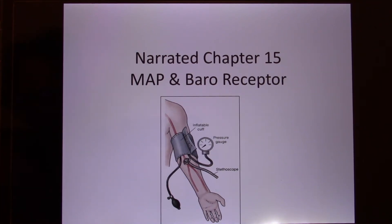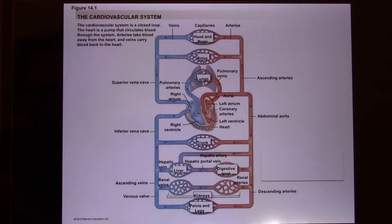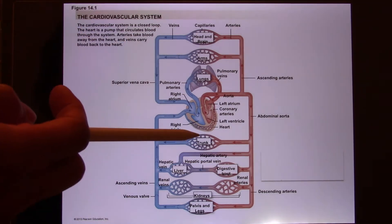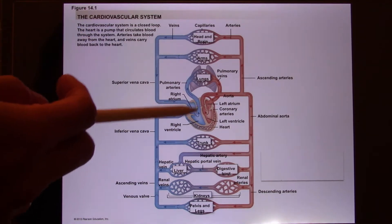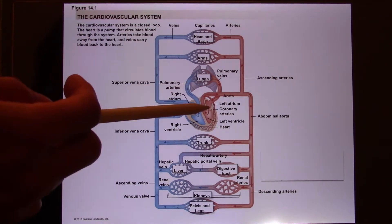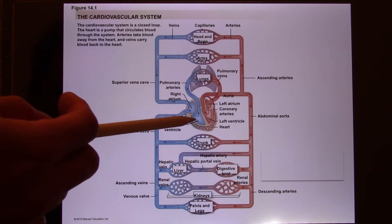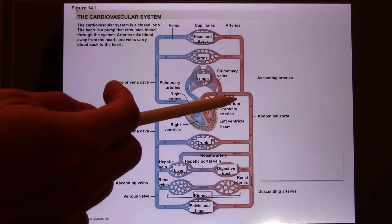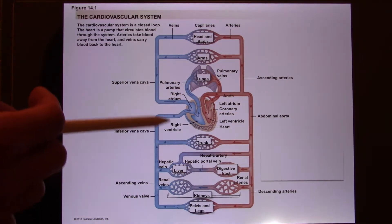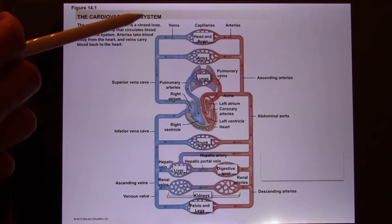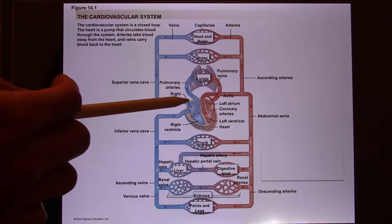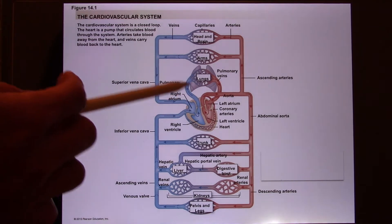We are in Chapter 15, Blood Pressure. Your cardiovascular systems are made of pumps and pipes. Your heart has two pumps: the left pump and the right pump. The right pump has the deoxygenated blood, the left pump has oxygenated blood. They send blood out through those pipes — to the whole body and back to the left side, then from the left side to the right side, and the right side sends blood to the lungs.